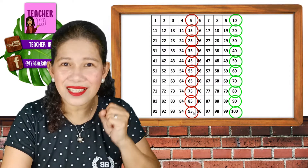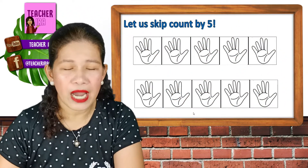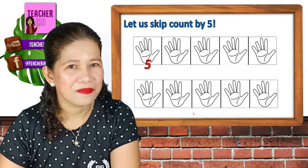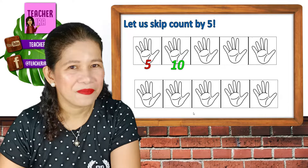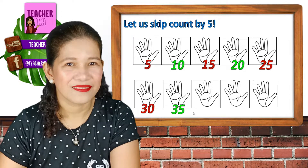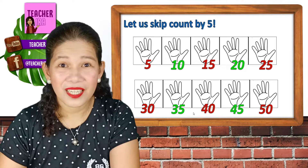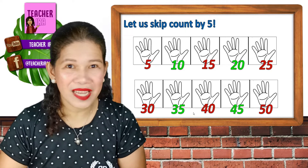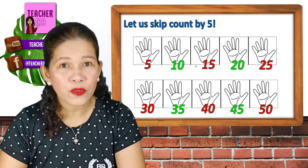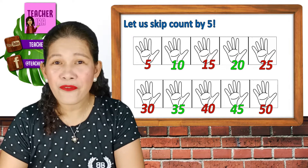Okay? So let us see if we can still remember it. Let us skip count by 5 — you do it on your own. Go! You did it? Yeah! Very, very good! Let us read it again: 5, 10, 15, 20, 25, 30, 35, 40, 45, 50!